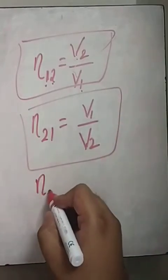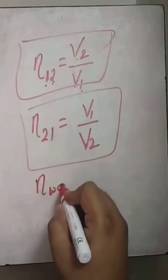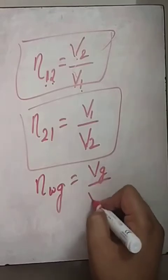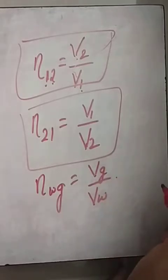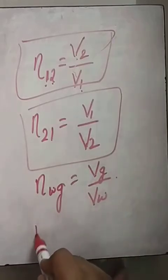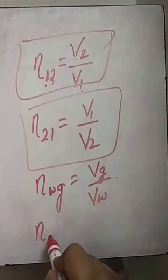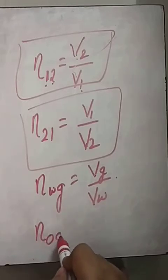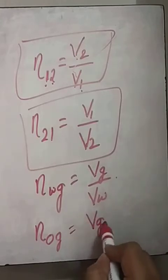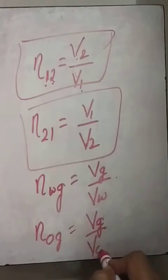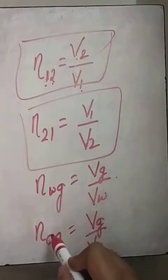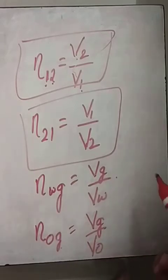For example, the refractive index of water with respect to glass is the speed of light in glass divided by the speed of light in water. Similarly, if I ask you the refractive index of oil with respect to glass, you would write speed of light in glass divided by speed of light in oil. So whichever medium is written second goes to the numerator, and whichever is written first goes to the denominator.